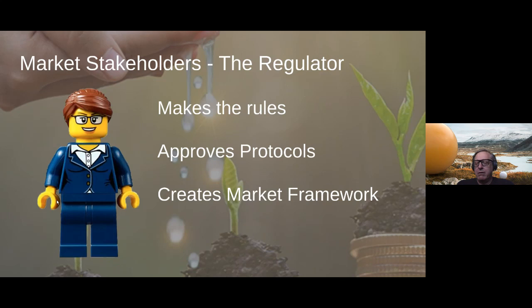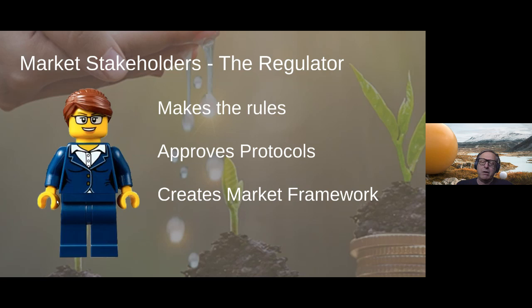Within the compliance market there are a number of market stakeholders. The first is the regulator, responsible for creating the rules under which the market operates. They approve protocols — which are, in simple terms, recipes for converting emission reductions into carbon credits. Protocols need to be approved by the government and must be additional to business as usual. Today this falls under the Office of Environment and Parks.